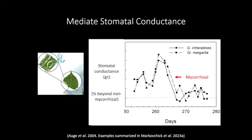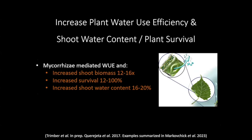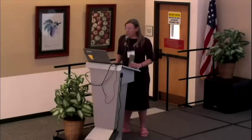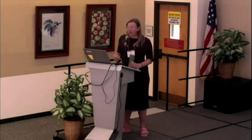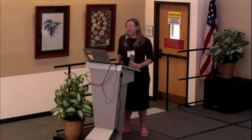Mycorrhizae are also mediating stomatal conductance beyond what the plant would do otherwise — here's the non-mycorrhizal situation, and then the results from two mycorrhizal species. As a result, they're increasing plant water use efficiency. The studies from greenhouses and labs indicate that we could actually be doing a lot on the land for the benefit of it.